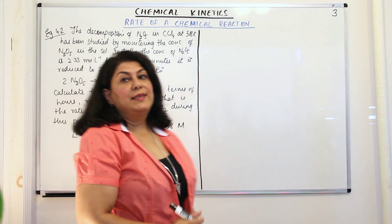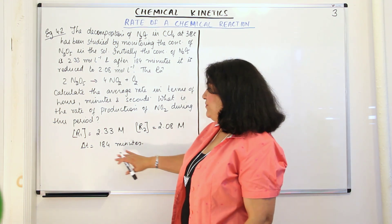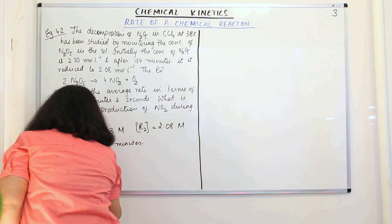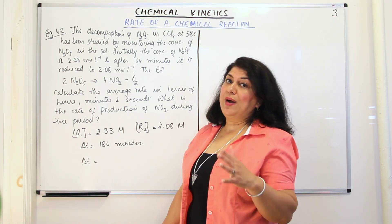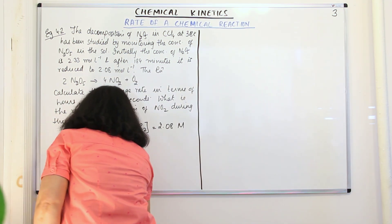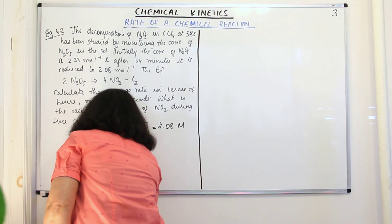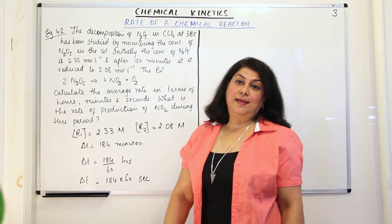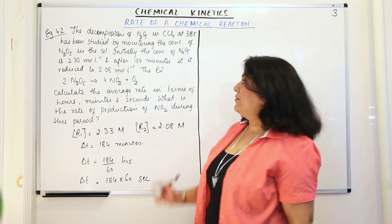You are supposed to calculate the rate in terms of minutes, seconds, and hours. If delta T is 184 minutes, to convert to hours you divide by 60: delta T in hours = 184 divided by 60. And delta T in seconds = 184 minutes multiplied by 60 seconds per minute. Using the appropriate value of delta T, you will now calculate the average reaction rate.